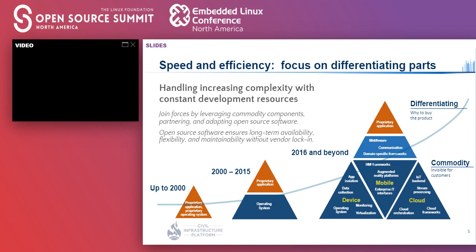Even industrial IoT devices can be categorized into civil infrastructure. The way to develop all those systems and devices has been changing. Before 2000, they had been developed with proprietary components. But after studying the Millennium, software layers were clearly divided into competitive and non-competitive layers. People had focused on proprietary applications in the competitive layer to differentiate functionalities. Recently, the situation has become much more complicated because mobile and cloud technologies have become more commodity, and systems and devices now consist of many more components, but development resources have not changed much.